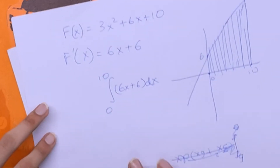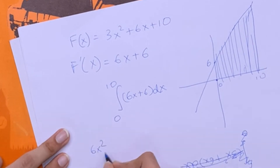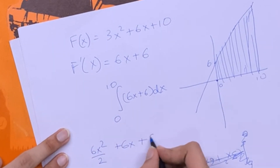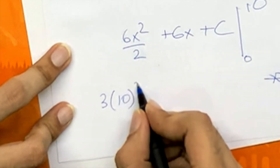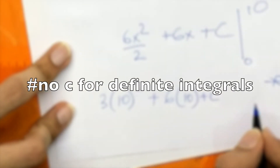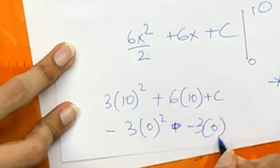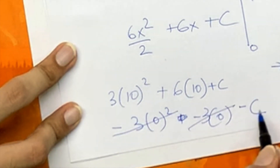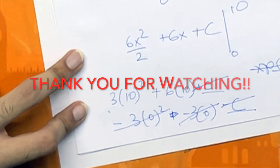We can also see this algebraically. The indefinite integral of 6x + 6 dx is 3x² + 6x + C. Applying the boundaries from 0 to 10: we get (3·10² + 6·10 + C) − (3·0² + 6·0 + C), and the +C and −C cancel out. So we don't need to worry about the constant in a definite integral — it always gets cancelled when we apply the boundaries.